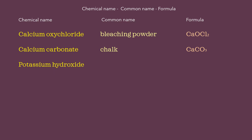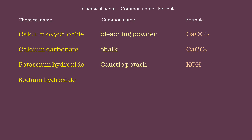Potassium hydroxide, common name caustic potash, formula KOH. Sodium hydroxide, common name caustic soda, formula NaOH.